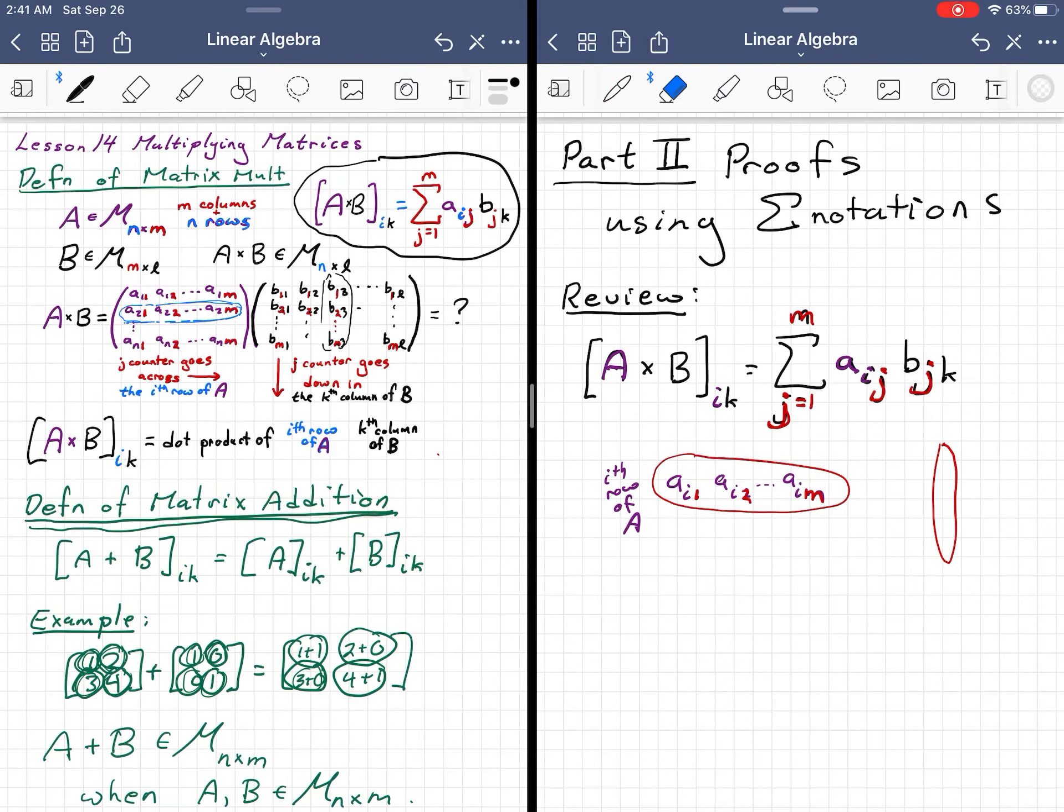And then we're going to go down the k-th column of B. So going down the k-th column of B means it's B 1k, B 2k, up to B mk. And the counter, which we are marking in red, is this entry, the first row of B, second, up to mth. Okay, so we're taking the i-th row of A and we're dot producting it with the k-th column of B. That's what we're doing.